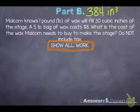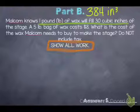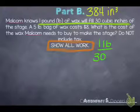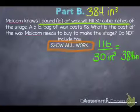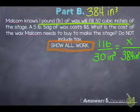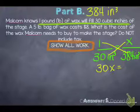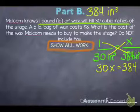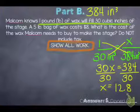First, I'm going back to the beginning. We know 1 pound of wax fills 30 cubic inches. We have a stage that's 384 cubic inches, and we need to figure out how many pounds of wax we need. I'll cross multiply: 30x equals 384. Dividing 384 by 30 gives us a decimal: 12.8.